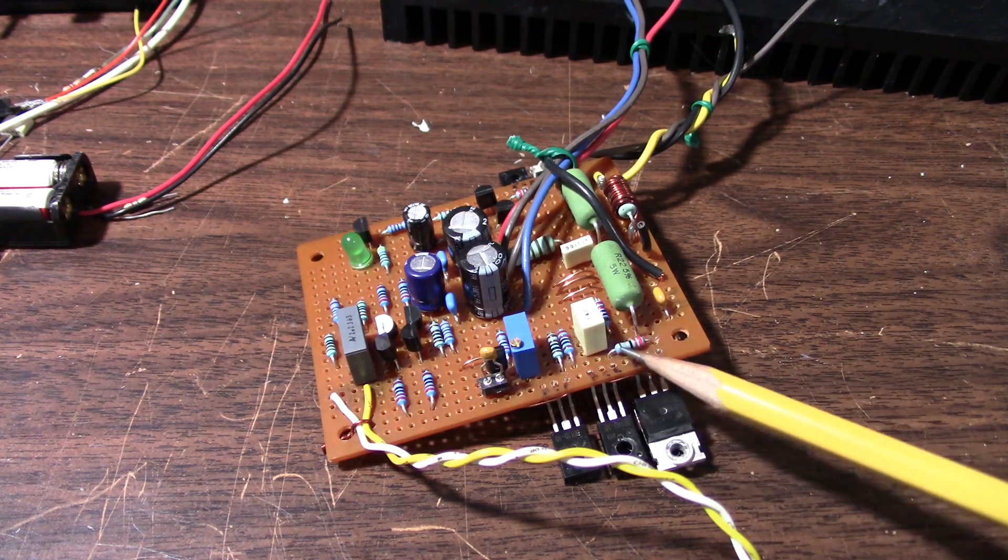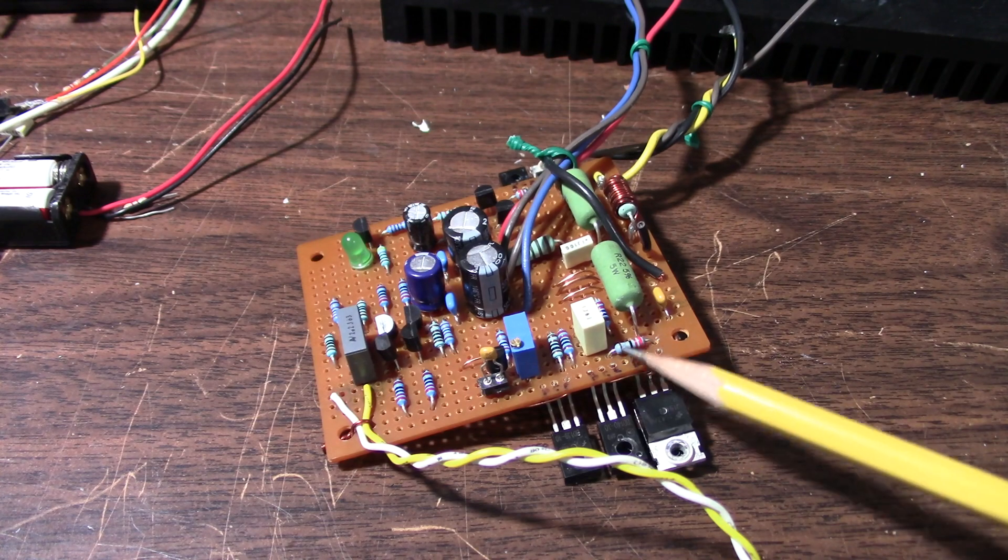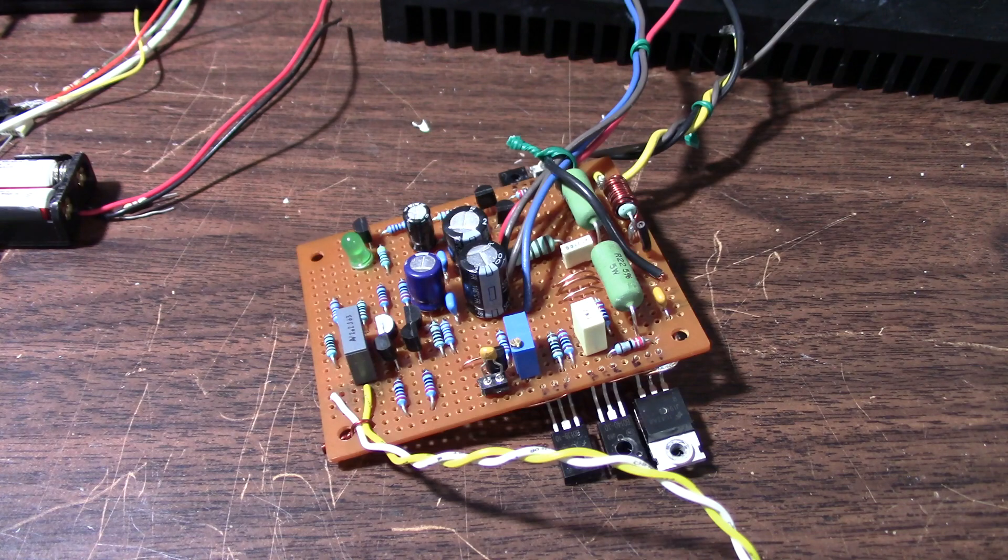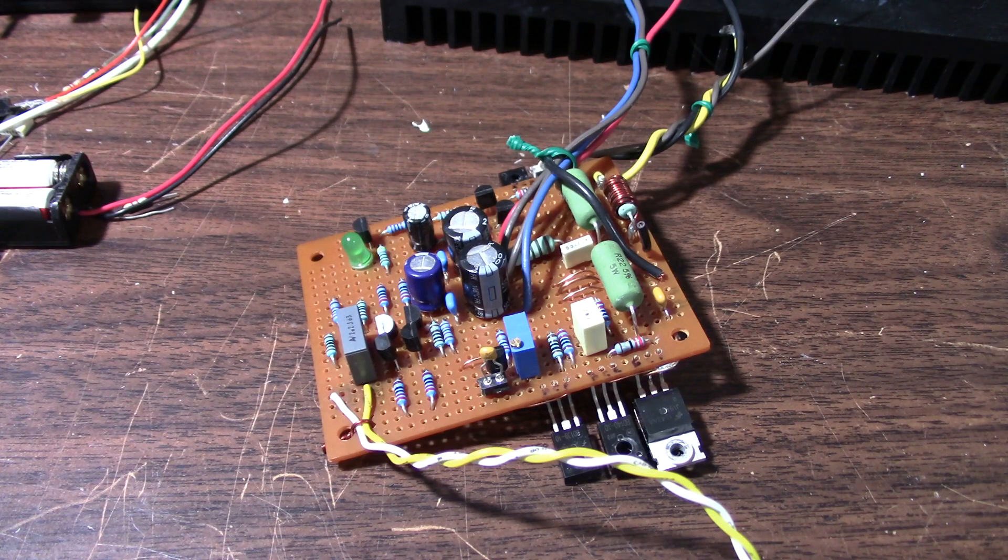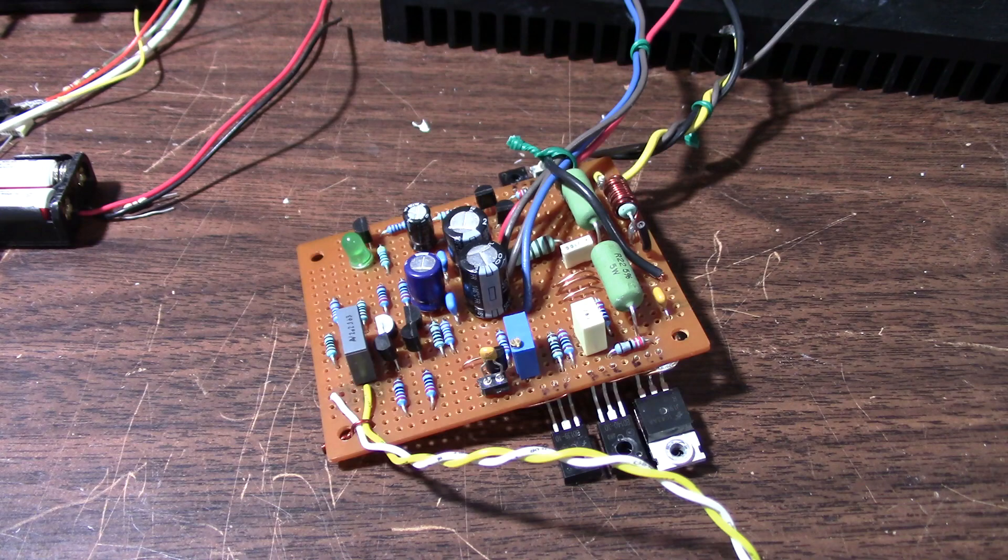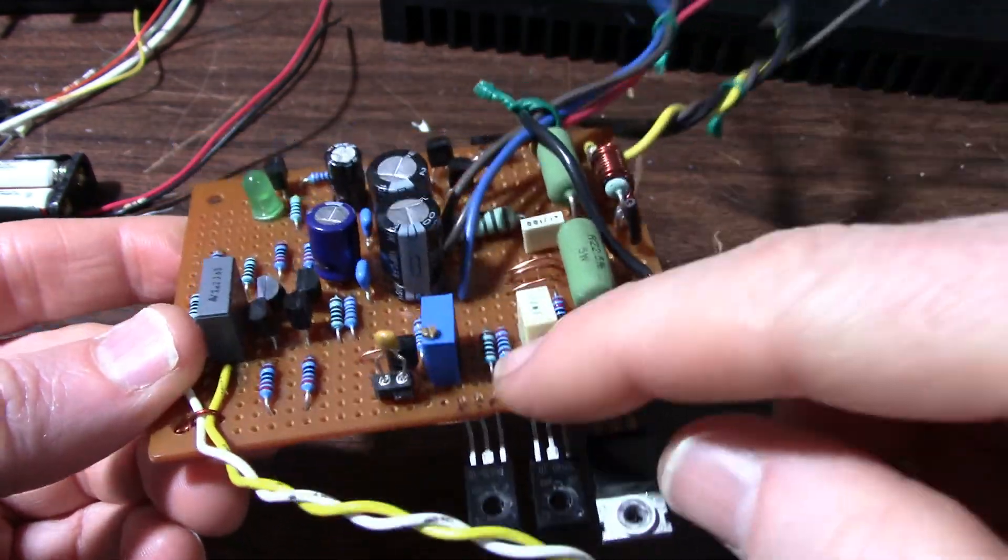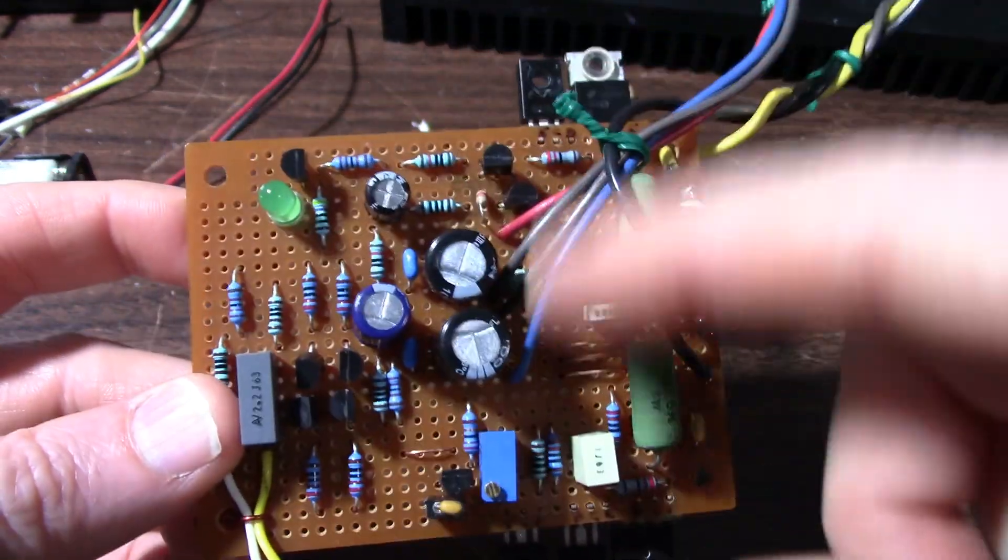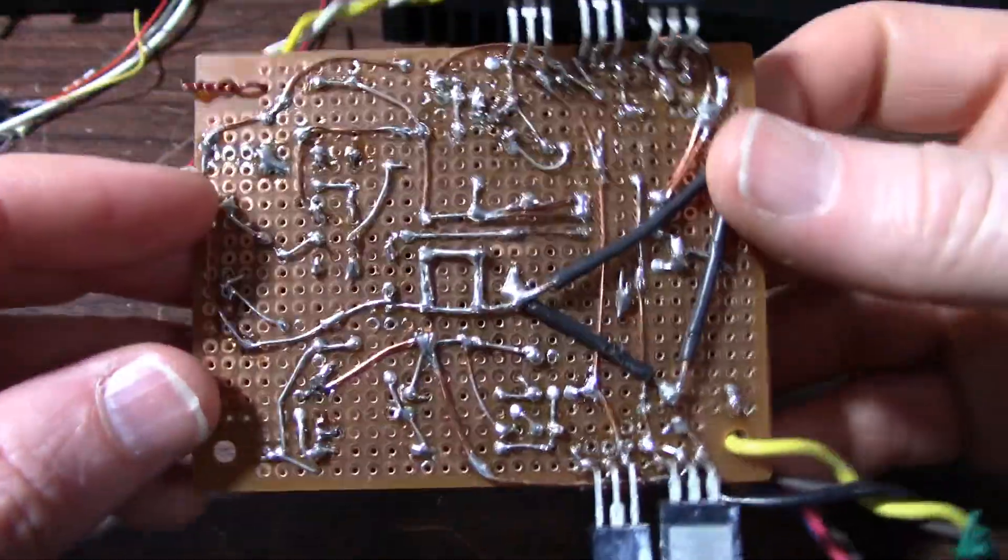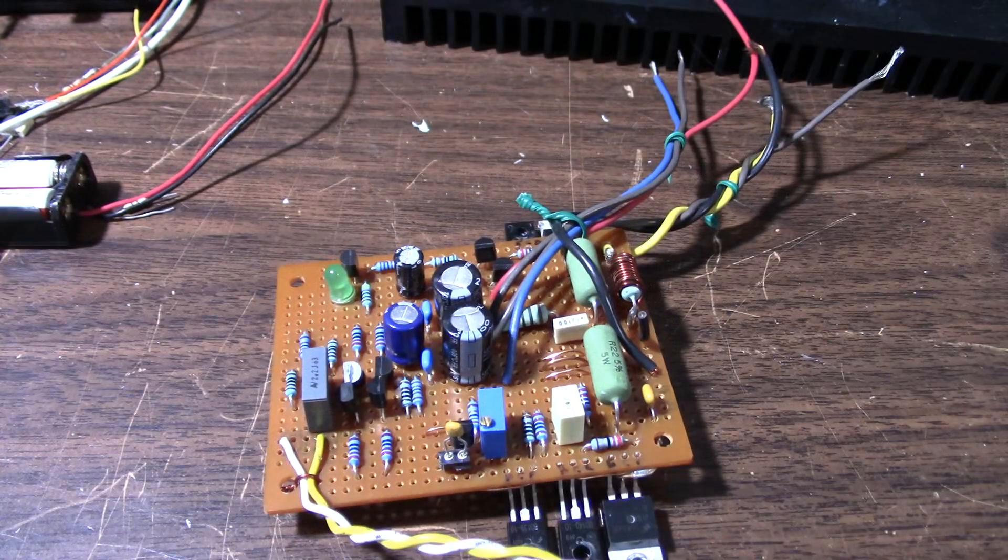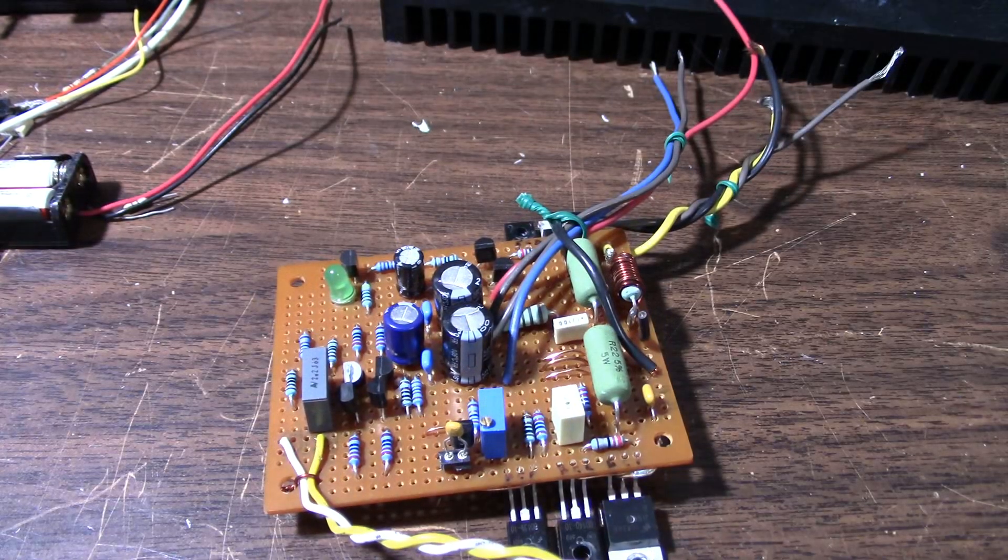So what I did is I installed base stopper resistors again. I had some 2.2 ohms. I was running five before. I wanted to minimize the value of those resistors, but still have the effect of the stability they help provide. I was able to put those on the board here on the top side. And the output stage is now stable again.